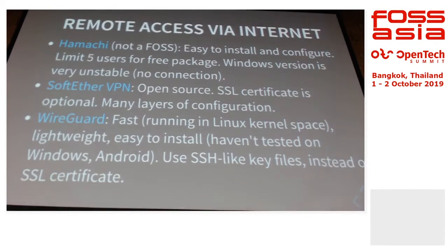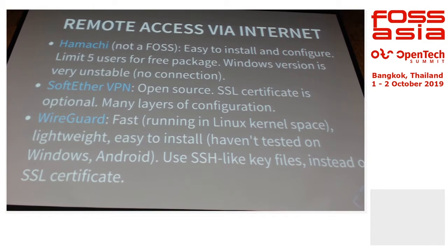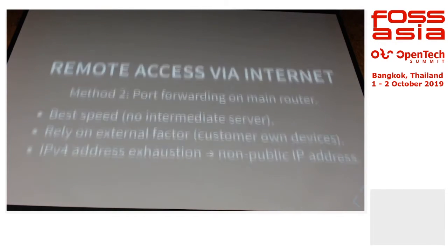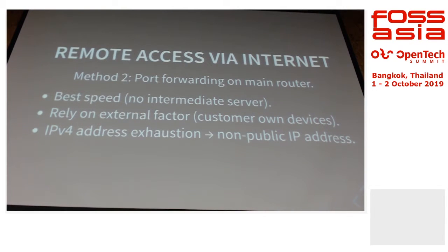We tried several VPN solutions. At first we tried Hamachi, but then stopped because the Windows client was very unstable. One member of our team uses Windows, so we also need to support Windows. The second one we tried was SoftEther VPN. And now we use WireGuard, a very new VPN solution in Linux. We also have a second method using port forwarding on the router, which I think is very well known so I won't go deeper into it.